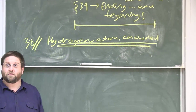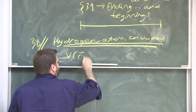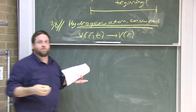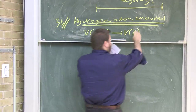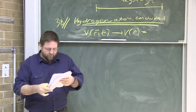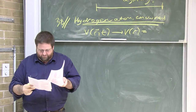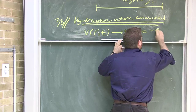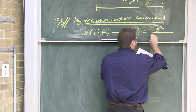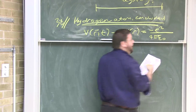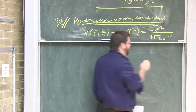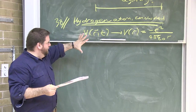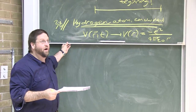We're considering the time-independent Schrödinger equation. Instead of an arbitrary time-dependent potential, we have a rotationally symmetric potential that depends only on radial distance r from a particular point. For the Coulomb field surrounding the nucleus — a single point charge — we have the 1/r potential: minus e squared over 4πε₀r, where e is the magnitude of the charge on the electron, ε₀ is the permittivity of free space, and r is the radial distance from the nucleus.